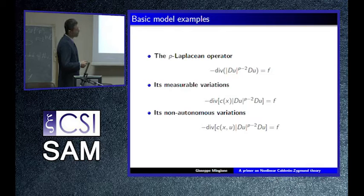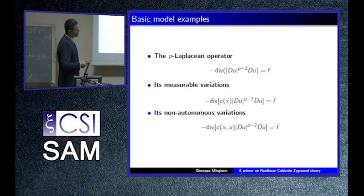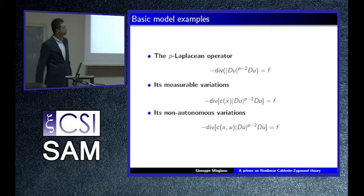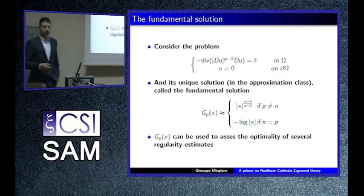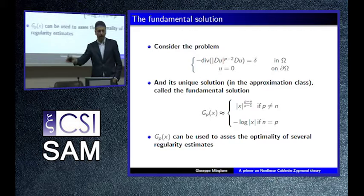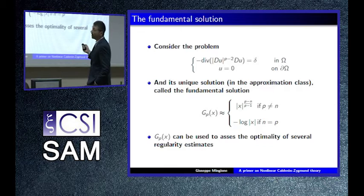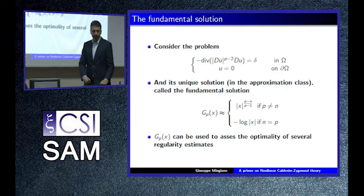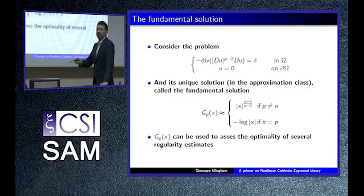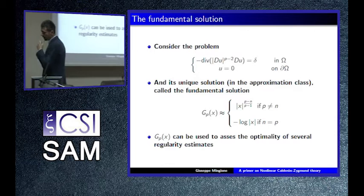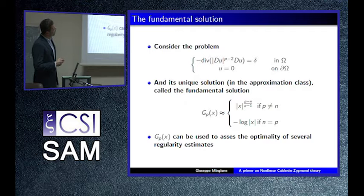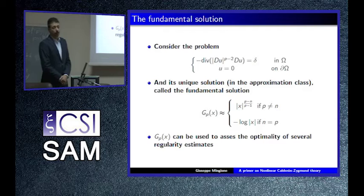From now on everything I'm going to talk about is about SOLA, but essentially these are the most general solutions you can obtain with these problems. The model examples are the P-Laplacian and P-Laplacian with coefficients, non-autonomous versions. The worst solution for these problems — the one that also tells you what is the limiting integrability or regularity you might get — is the so-called nonlinear Green's function, which is given by the Dirac mass concentrating at the origin.